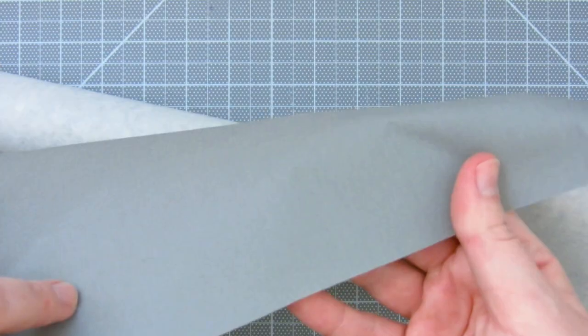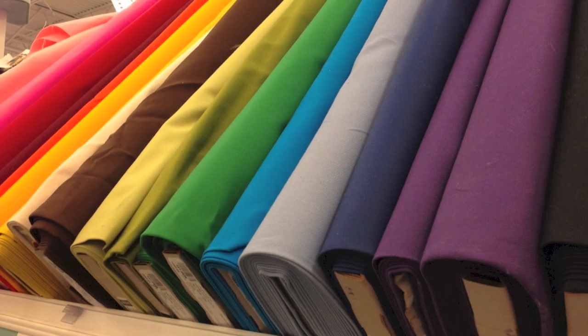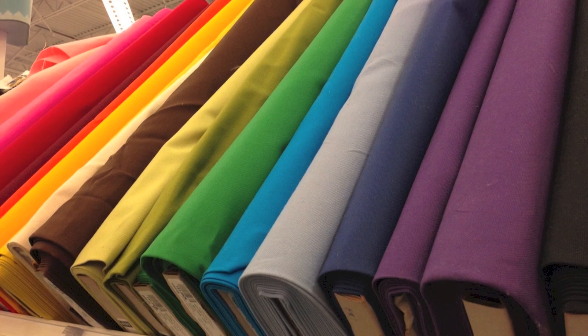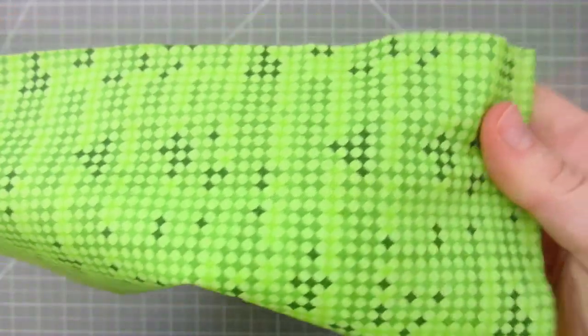Book cloth is fabric backed with a surface that makes it easier to adhere to book covers. Not every material needs this backing, but most thin or cotton fabrics do. If you search for book cloth, you can find it for sale online or in specialty stores, or you can make your own.